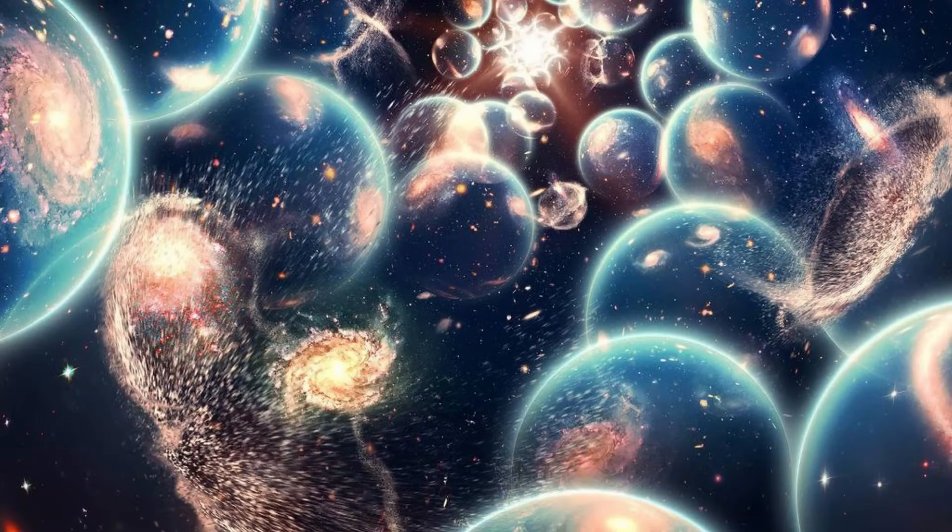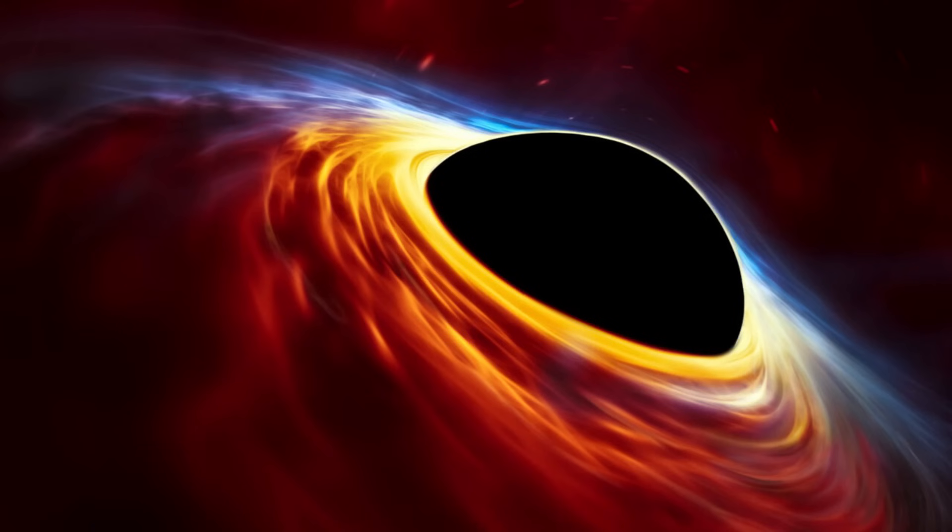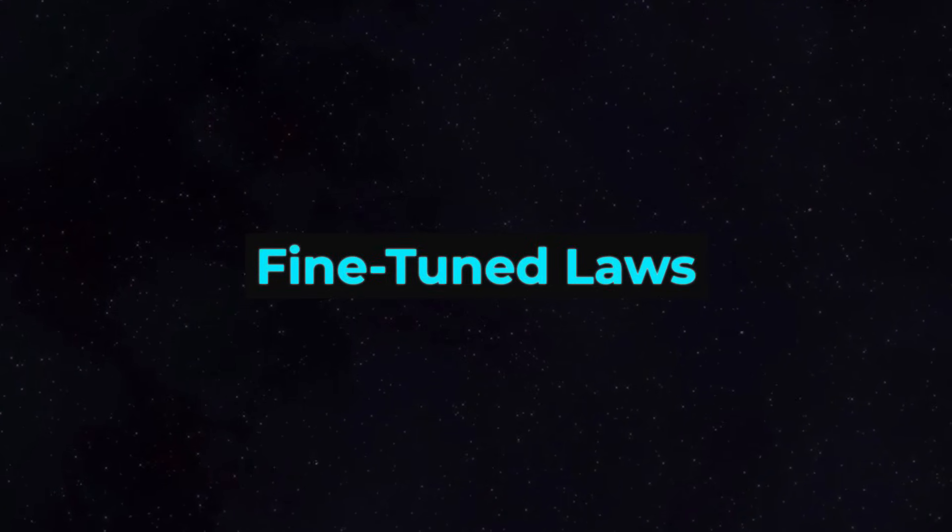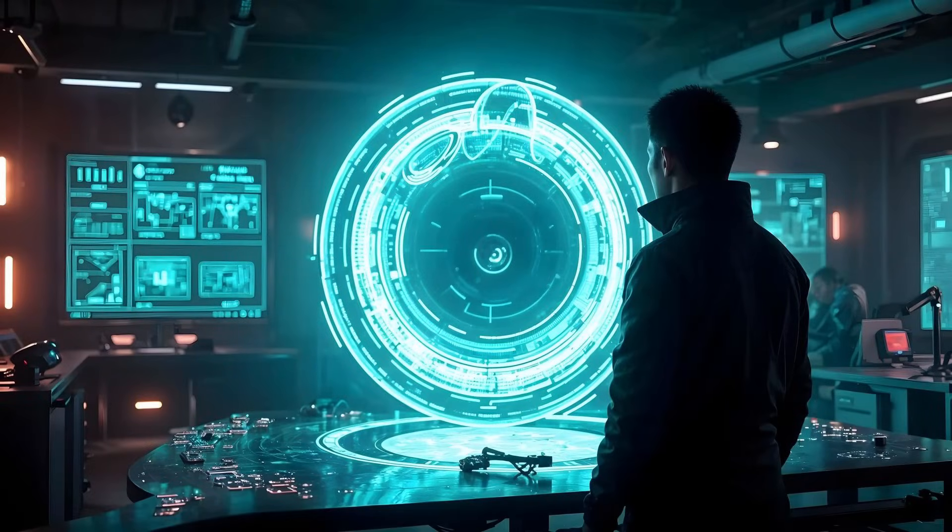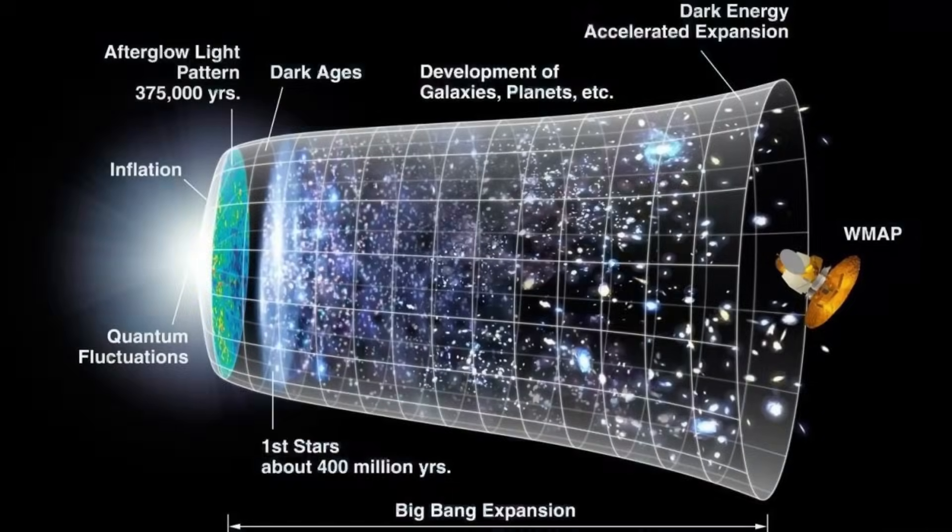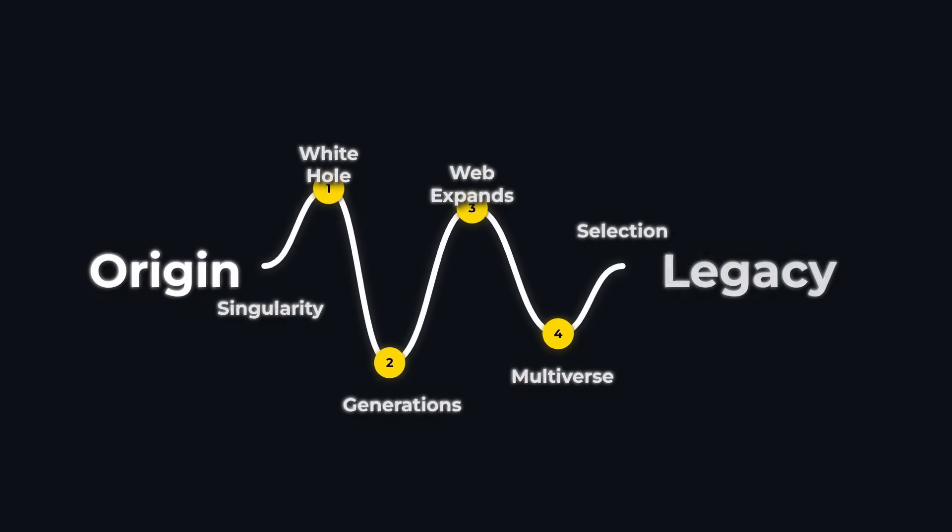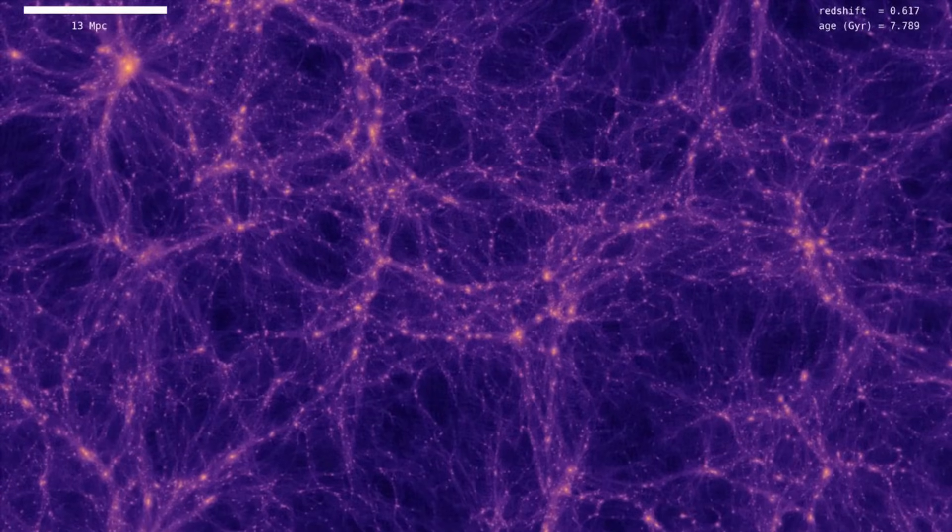It borrows a page from biology. Universes that are better at making black holes will produce more offspring, so over time, the multiverse becomes filled with universes optimized for black hole creation. In Smolin's scenario, our universe might be just one branch on this endlessly branching tree. The rules of physics we observe – the values of gravity, the mass of the electron, the strength of the strong force – could be the result of a long history of cosmic trial and error, with each generation tweaking the dials just enough to survive and reproduce. The universe isn't a one-off event, but part of a vast, interconnected family, each member shaped by the accidents and successes of its ancestors. And black holes aren't just the end – they're the beginning, too.